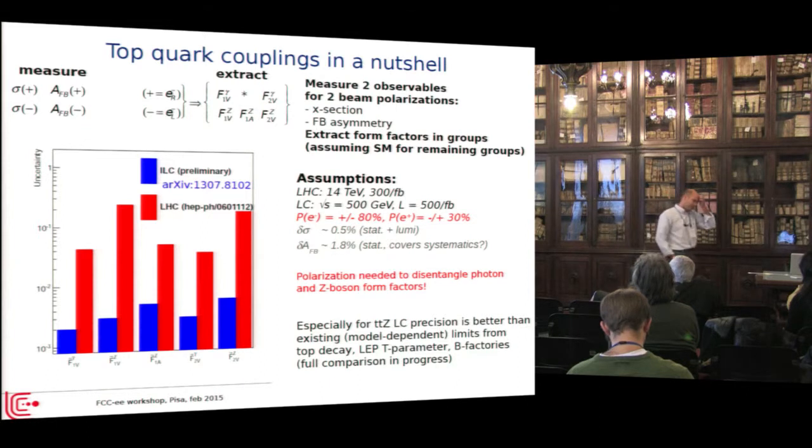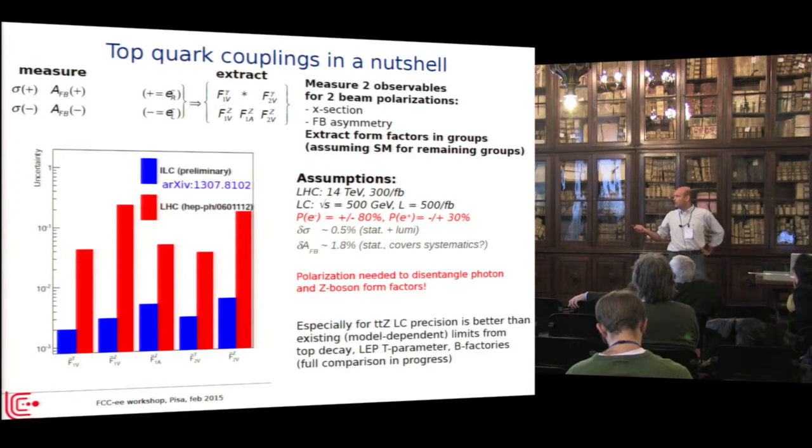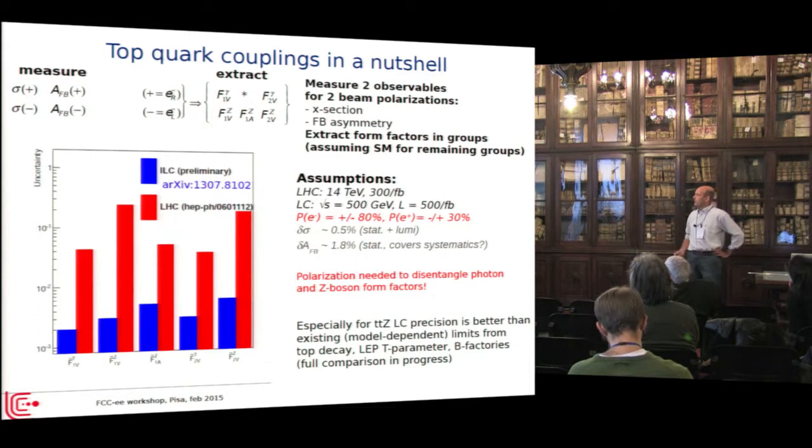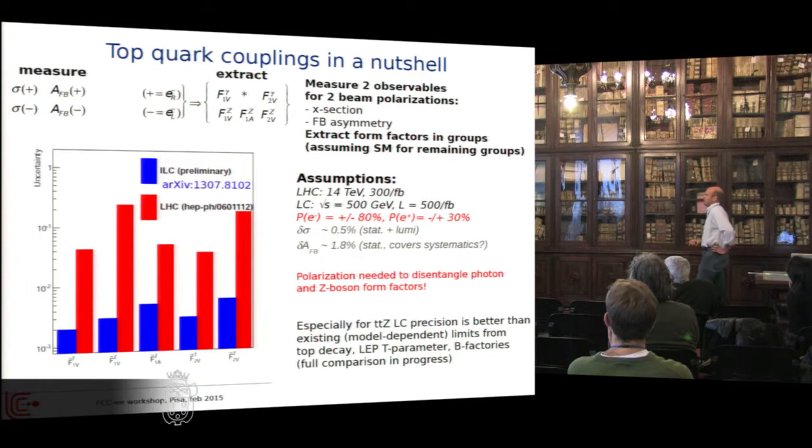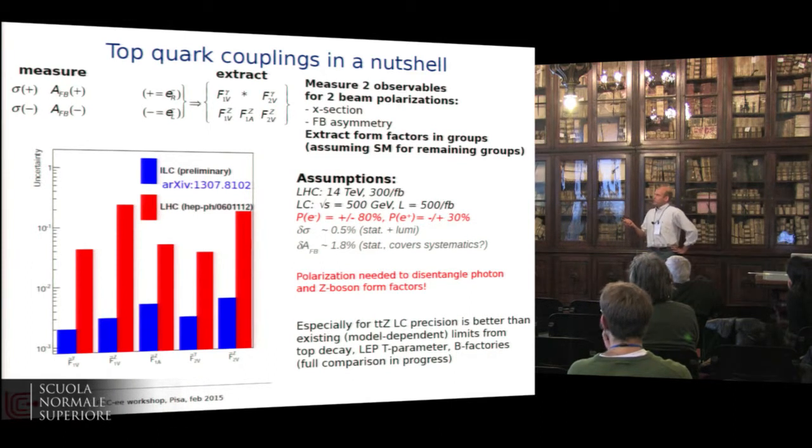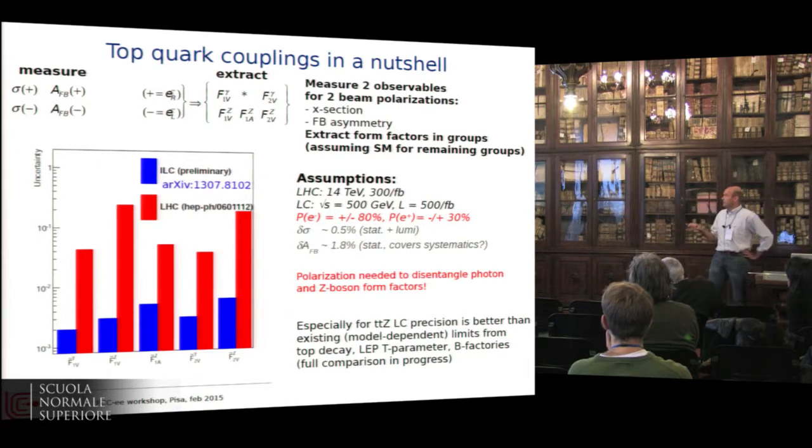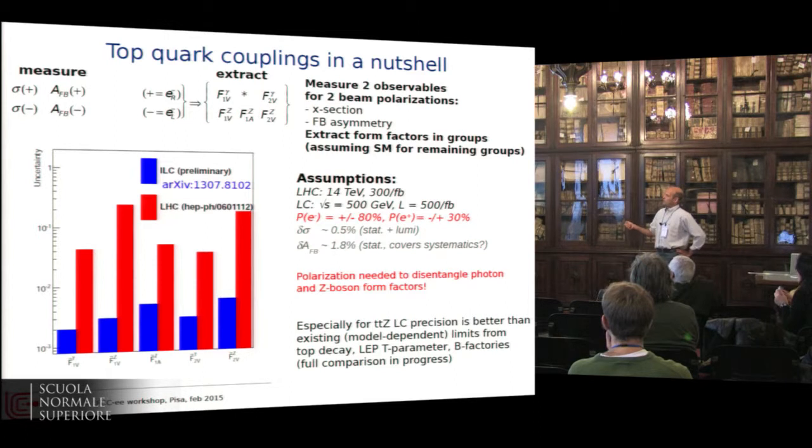Now to the content that I was supposed to give, the top-quark couplings. If I summarize the study in one slide again, we measure four observables. We have two polarizations for the beams. We measure cross-section and forward-backward asymmetry in both cases. Then we can extract a number of these form factors that get into the most general Lagrangian that you can write down. We can't extract them all at the same time, but we do it in pairs.